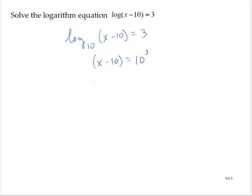10³ is 1,000, so x - 10 = 1,000. Adding 10 to both sides, x = 1,010.